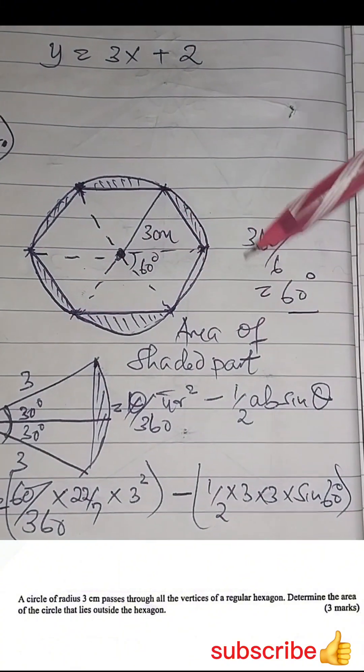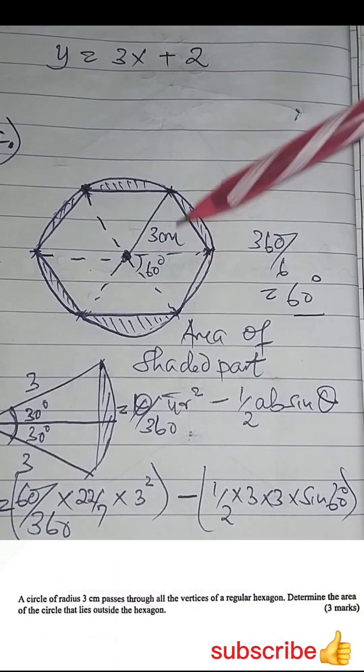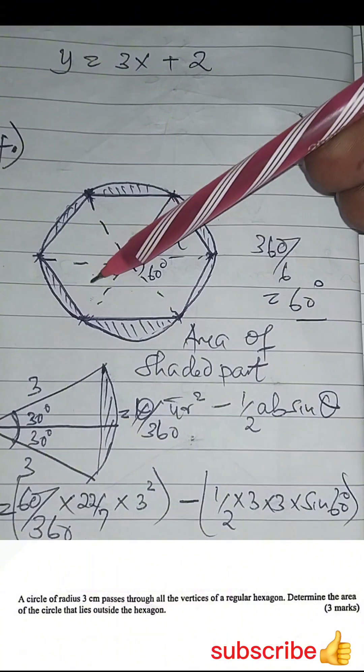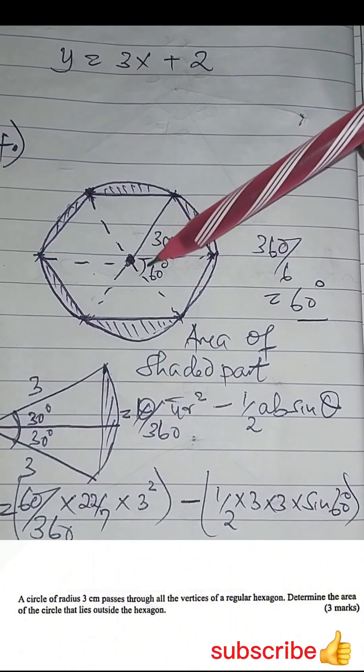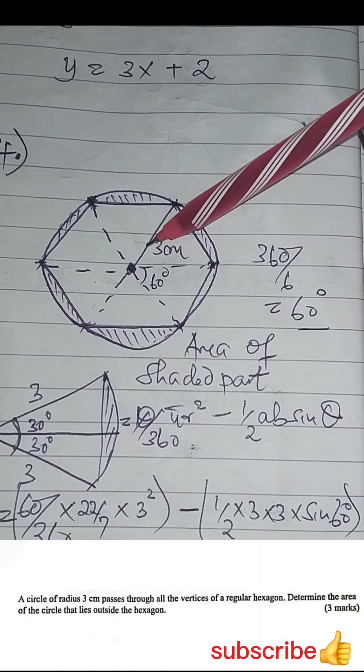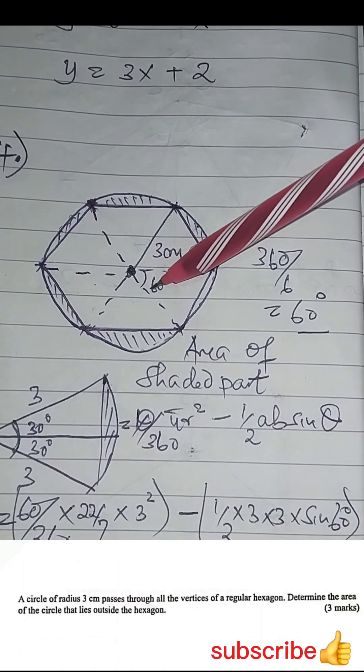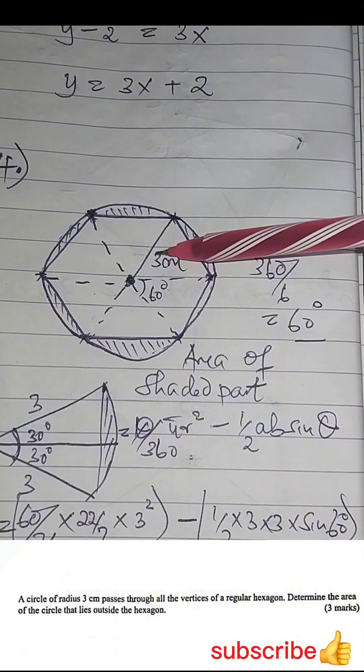If you join the diagonals, you find that these sections are equal. It means the angle here, the angle here, you have six of them. You take 360 divided by six, you get 60 degrees. It means the angle here is 60, and the radius is three.